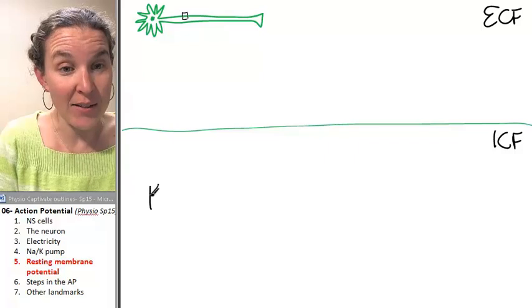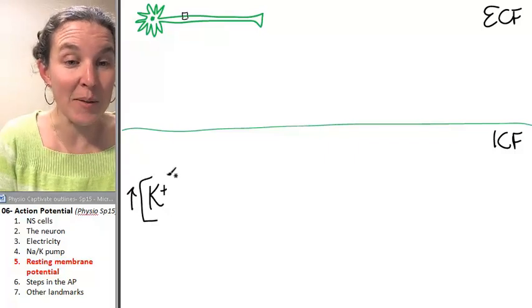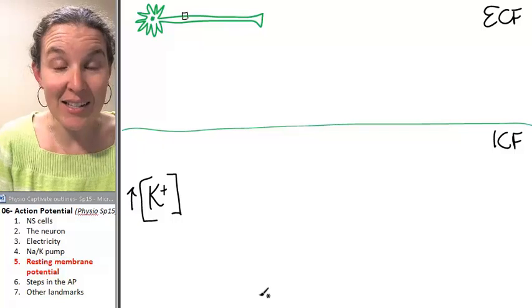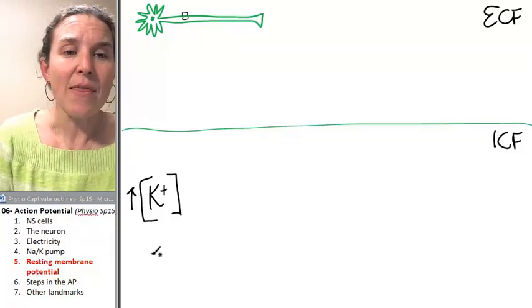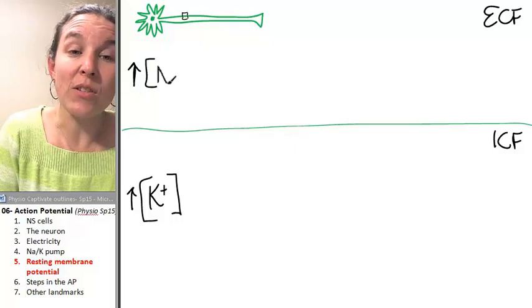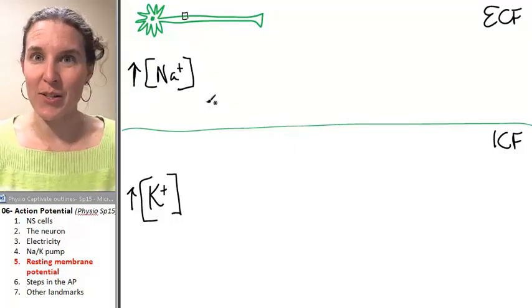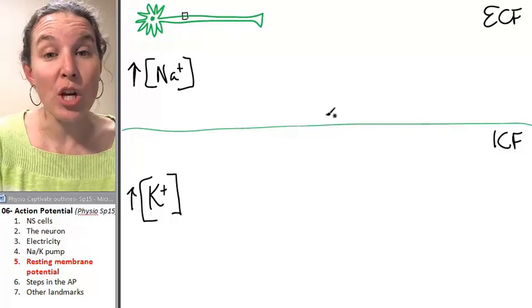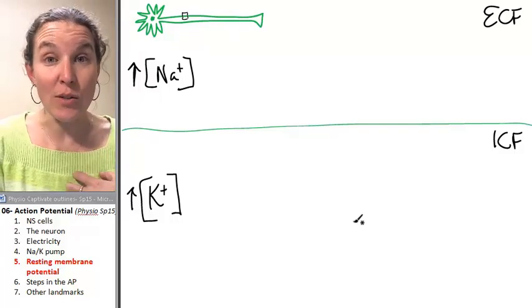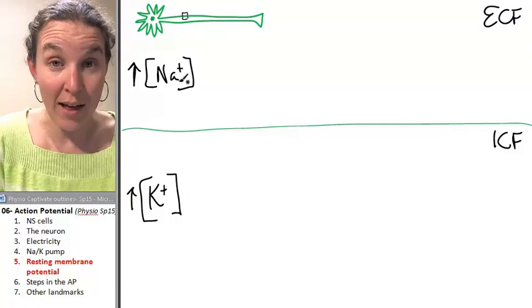Here are the facts. There is a high concentration of potassium inside the cell. There is a high concentration of sodium outside the cell. Now, think about the sodium potassium pump. Three sodiums out, two potassiums in. Again, can you see how the sodium potassium pump is going to maintain this reality?